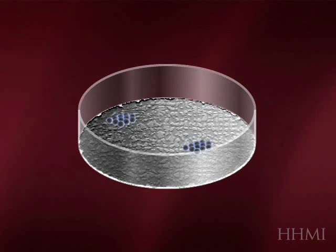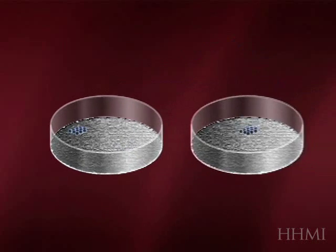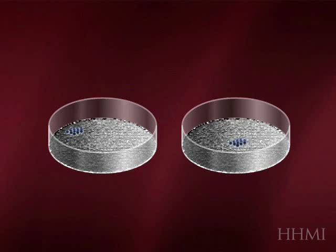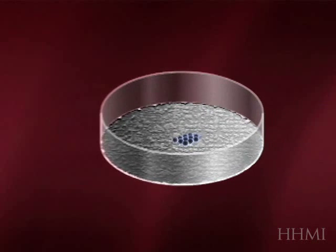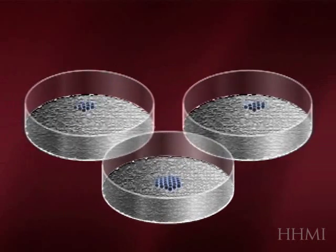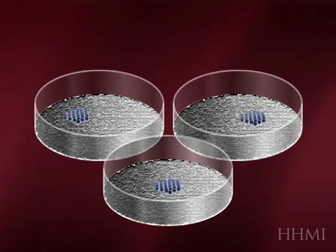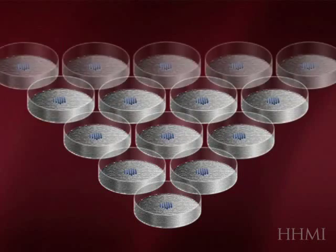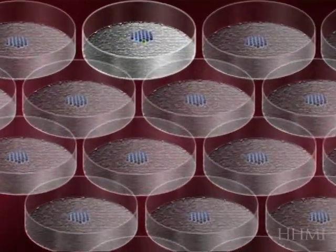So this, then, is that process of self-renewal. The cells can continually self-renew, and in fact, they are immortal in culture. They can be grown like this forever. Some mouse embryonic stem cells growing now in the lab were derived more than 30 years ago, so they long outlived the life of the animal from which they came.